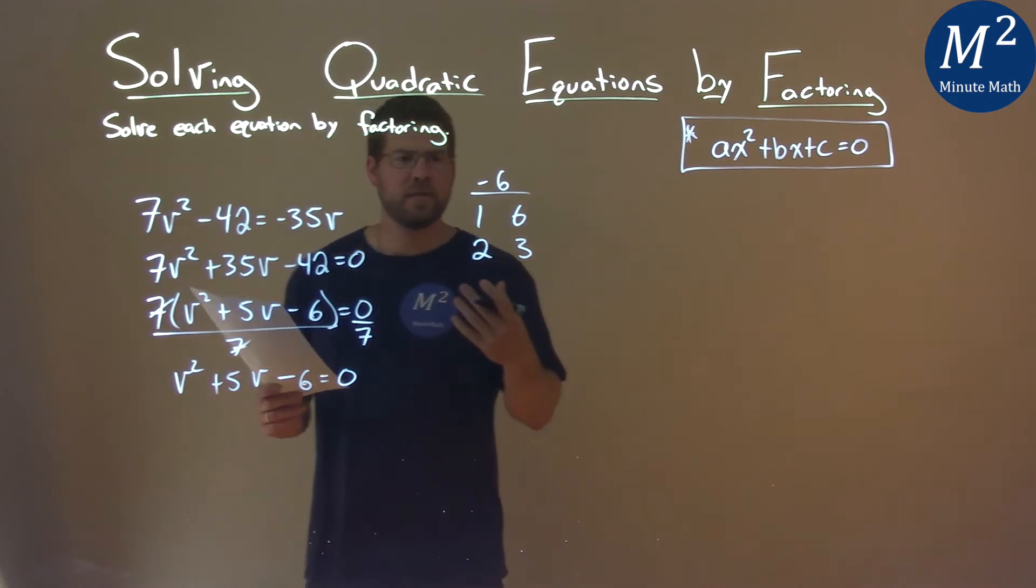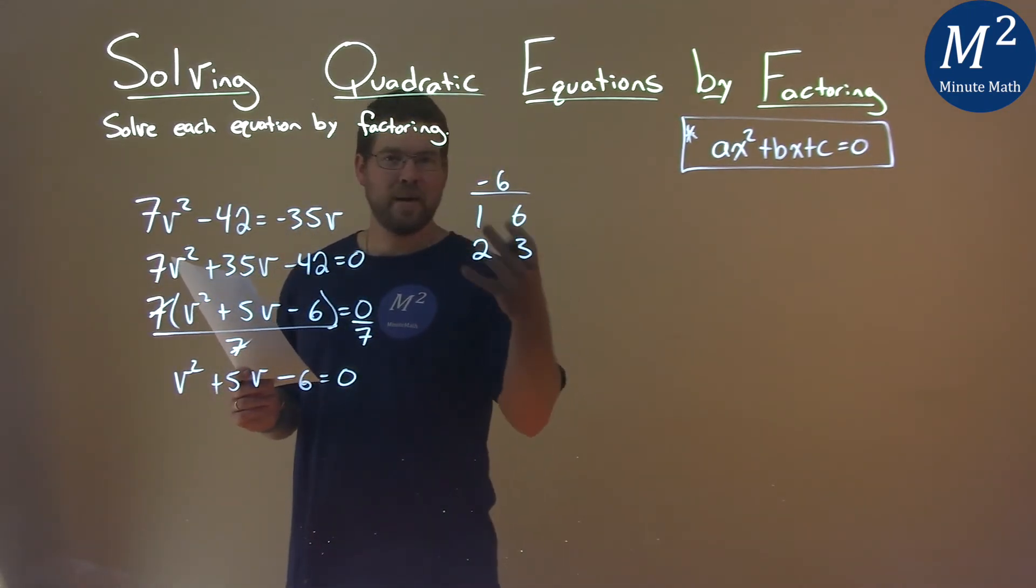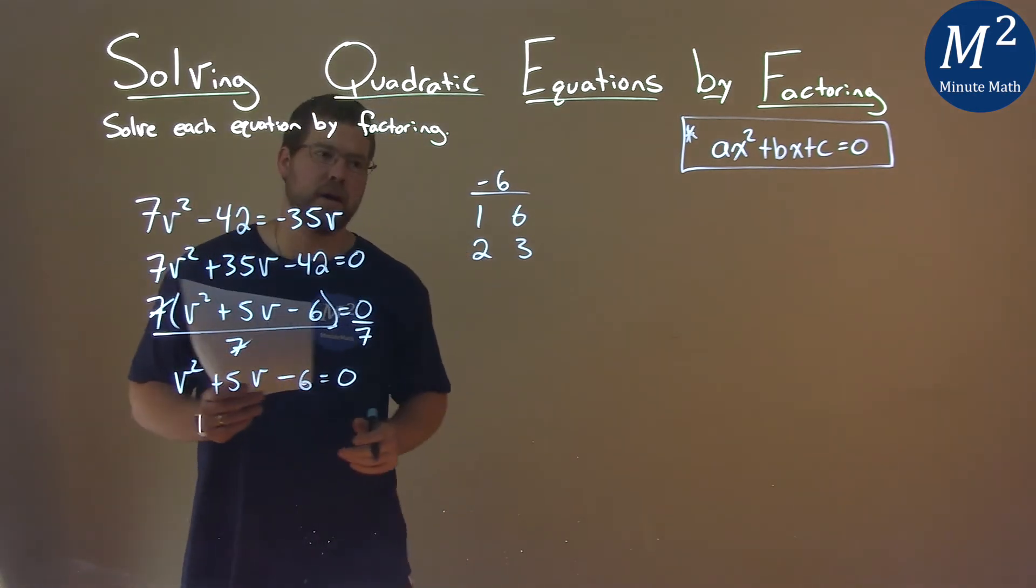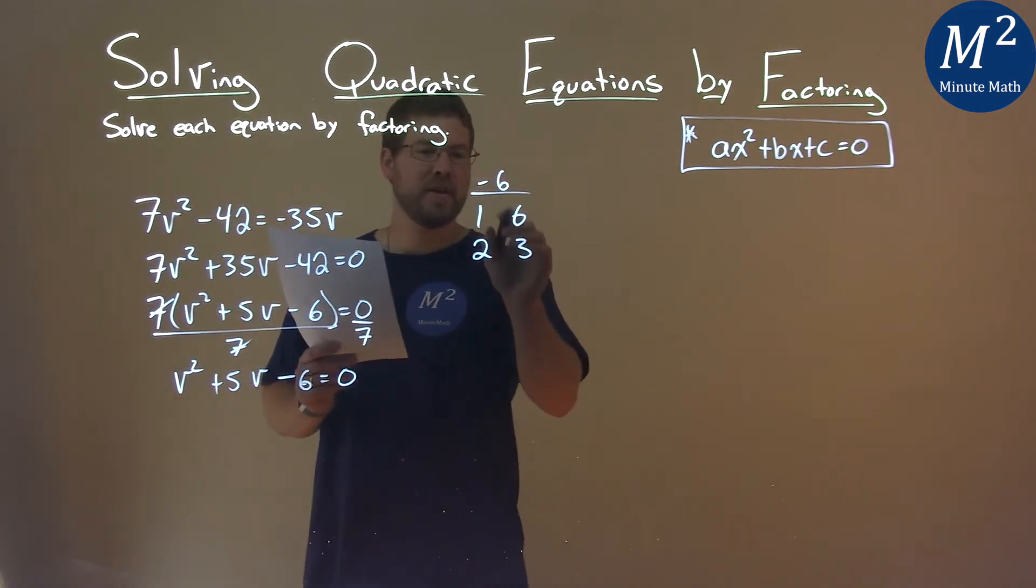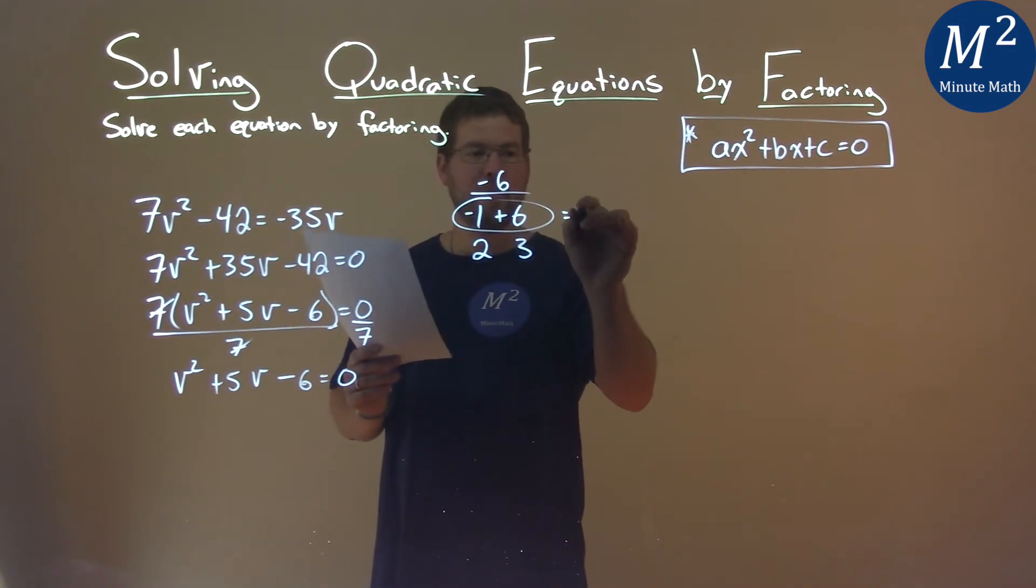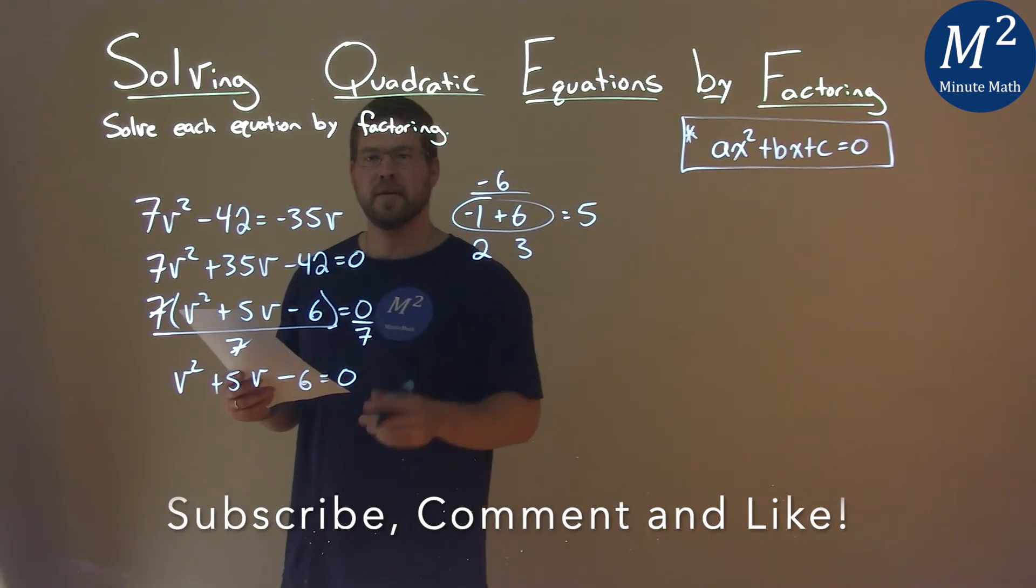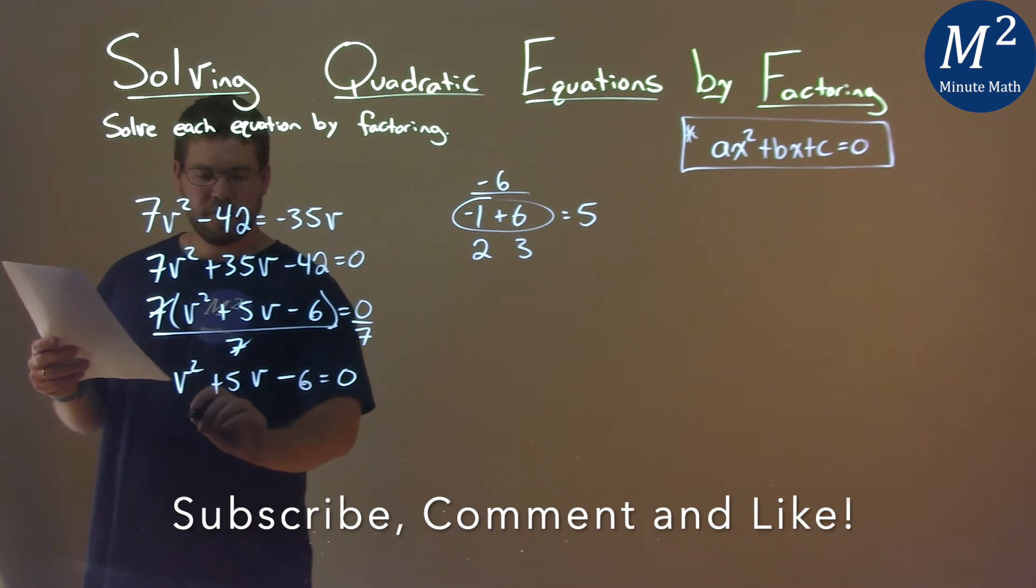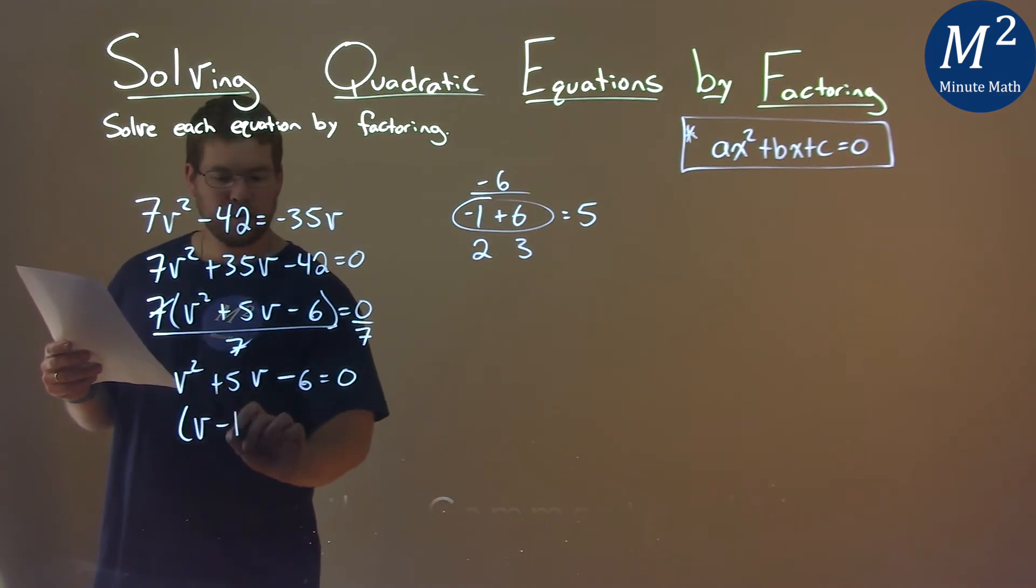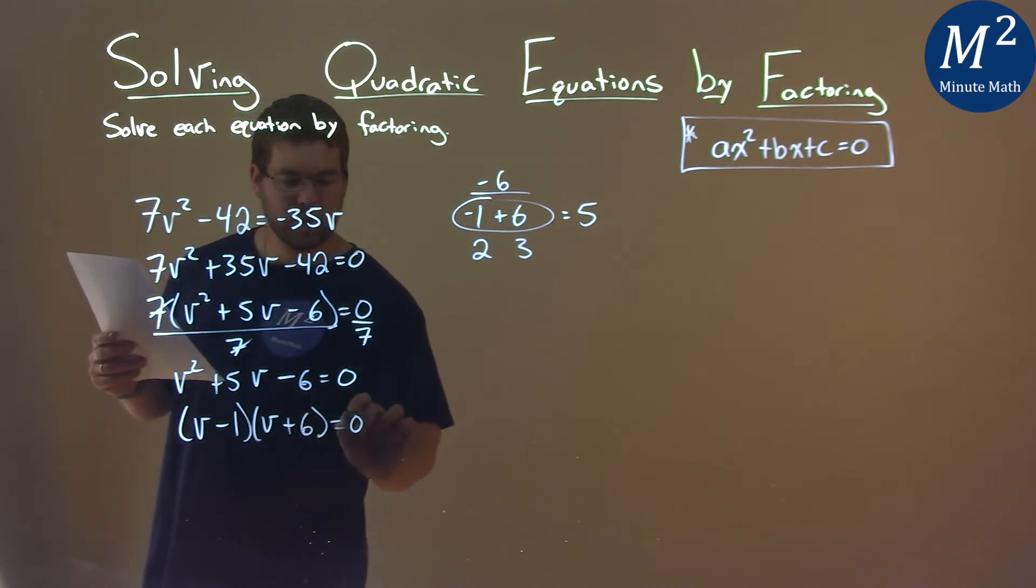So we have to ask ourselves, with one of the pairs being negative, can we add them together to get our b value, which is a positive 5? And that's really the first two, the 1 and 6. If we make it a negative 1 and add them together, we get a positive 5. So our two numbers are negative 1 and a positive 6. Factoring this out: (v - 1)(v + 6) = 0.